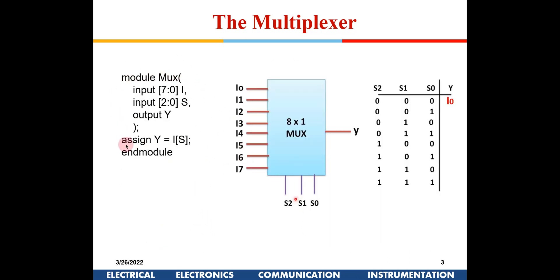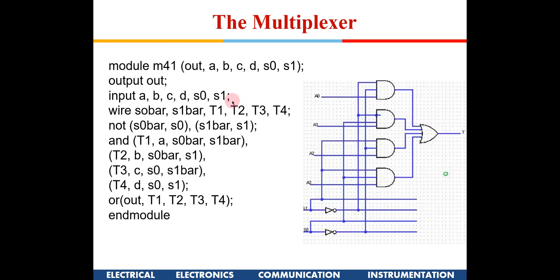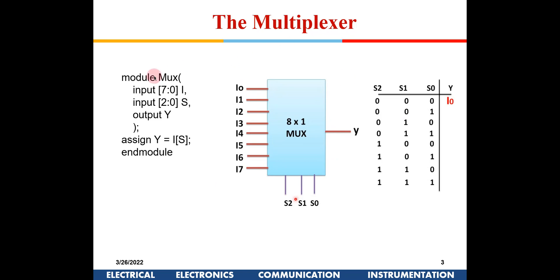A more efficient approach is data flow modeling. Here we have an eight-to-one mux. The input is an 8-bit data declared as I[7:0], where I[7] is the MSB and I[0] is the LSB. There is also a 3-bit control input S[2:0], where S[2] is the MSB and S[0] is the LSB. The output Y is a single bit.